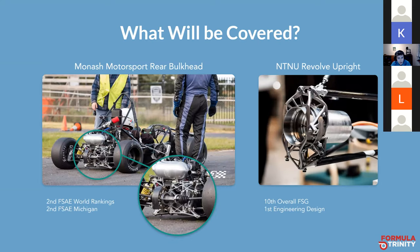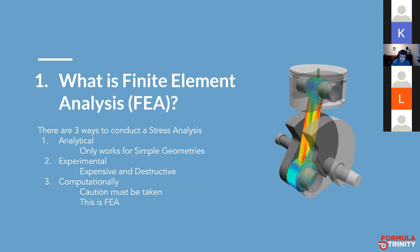I'll be going through two examples throughout: one is the Monash Motorsport rear bulkhead on the left — a structurally optimized part — and on the right is a more rigorously optimized part from NTNU, one of their suspension uprights that is 3D printed.